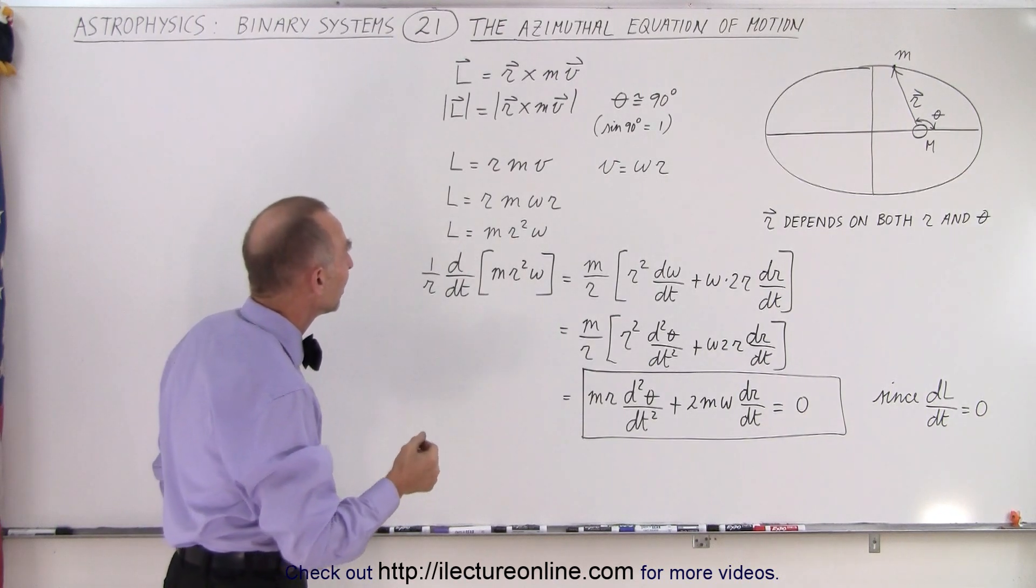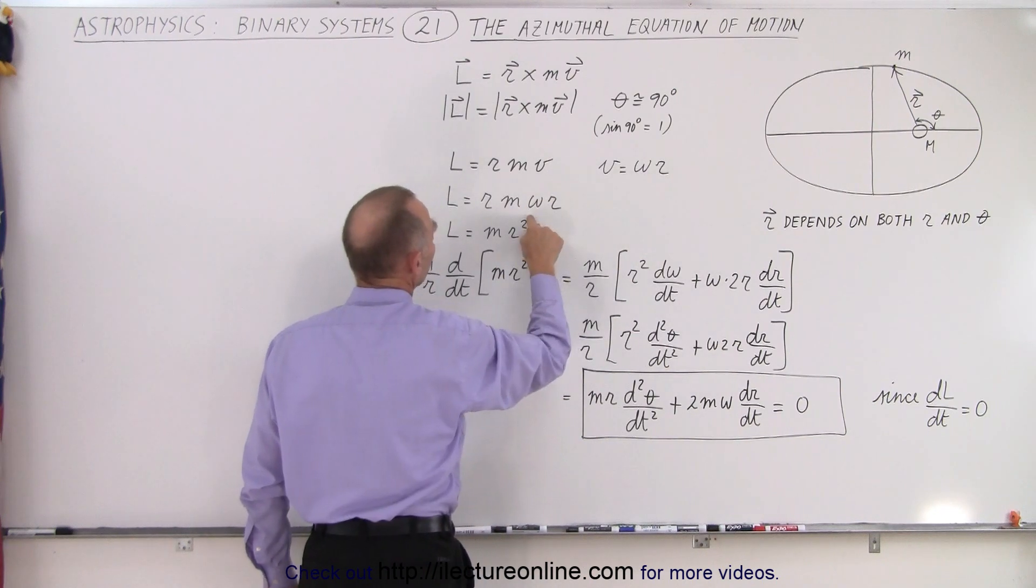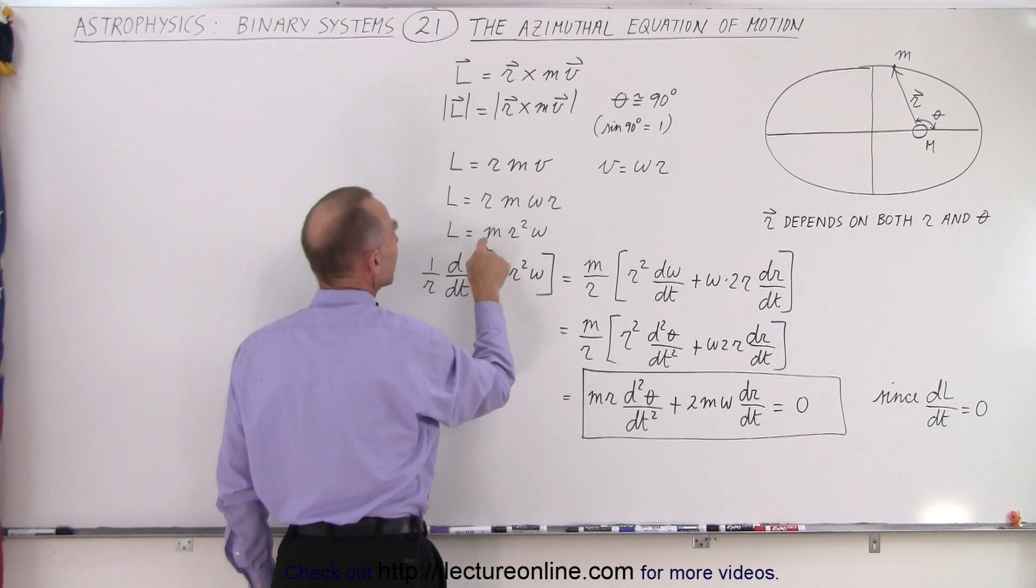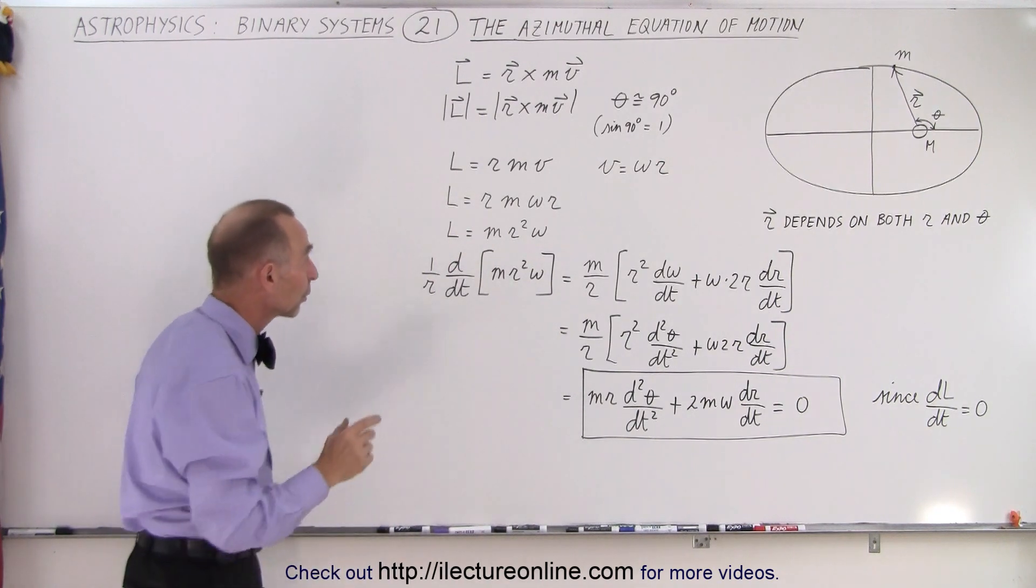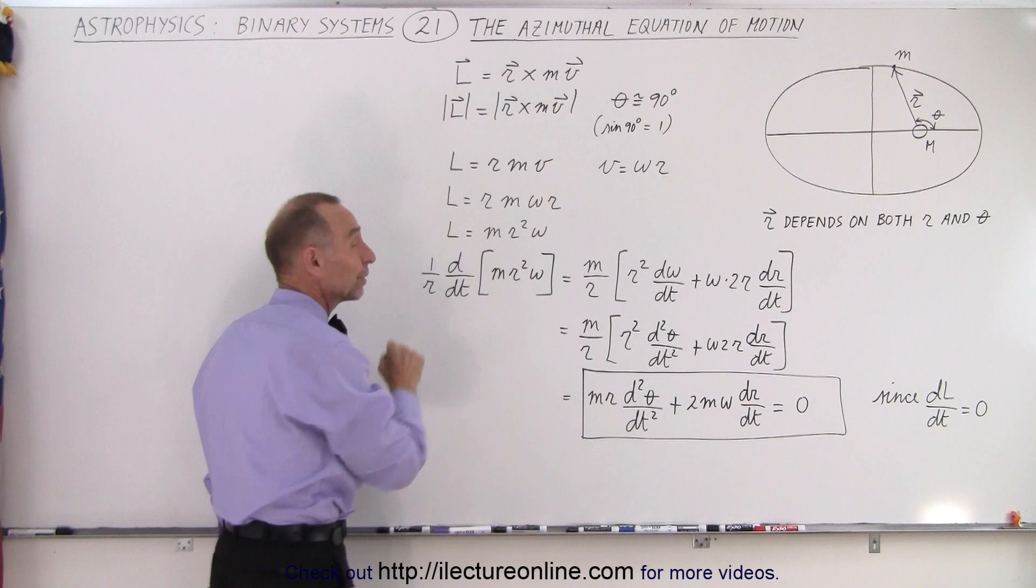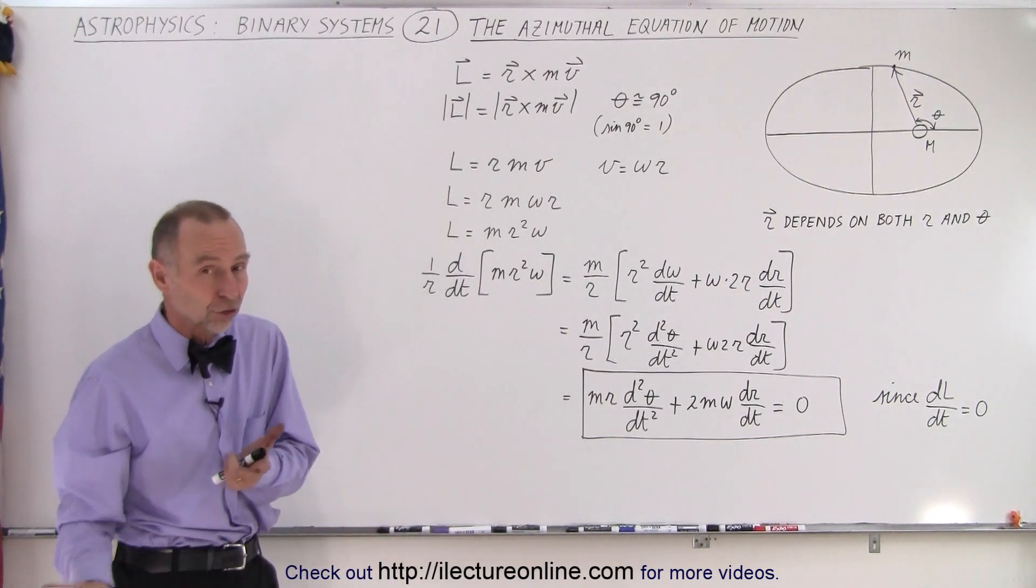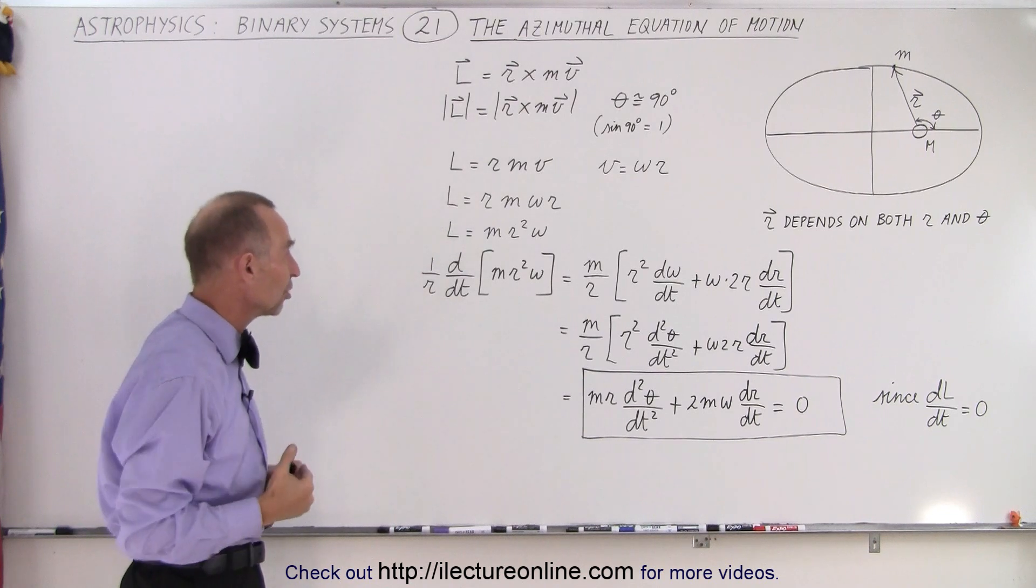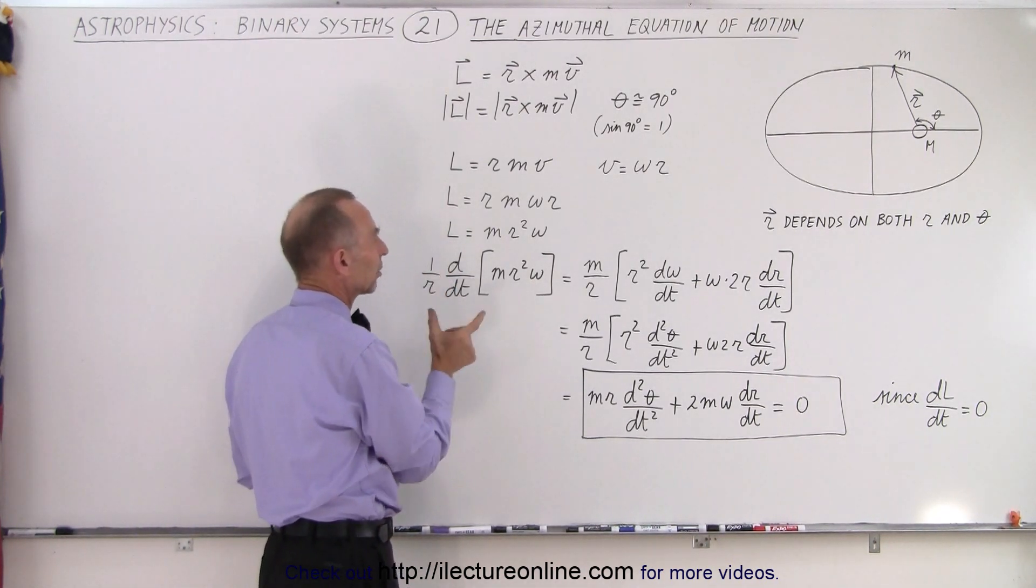So what we then have is v replaced by Omega times R, and then we end up with the angular momentum being M R squared times Omega. Now what we're going to do is take the derivative of this with respect to time. We know that when we take the derivative of the angular momentum we should get zero because there's no torque, therefore no change in the angular momentum. Then we multiply that by 1 over R and we get the following.